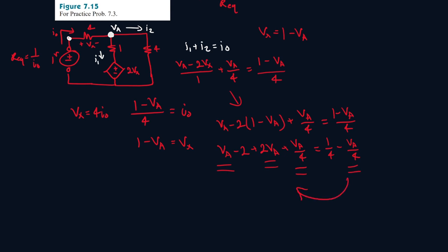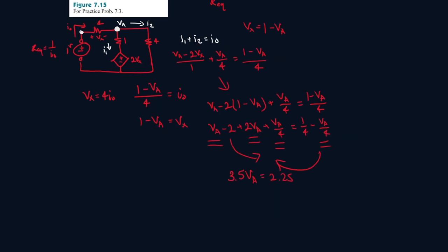So it will be 1 plus 2 plus 1 over 4 plus 1 over 4, so it's 3.5VA. And then we're going to bring this minus 2 to the other side. So it will be 1 over 4 plus 2, so it will be equal to 2.25. So let's solve for VA. So VA will be 0.6428.